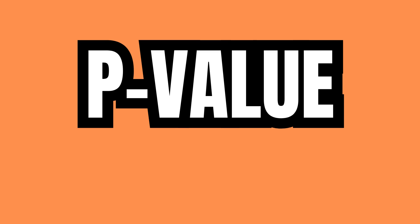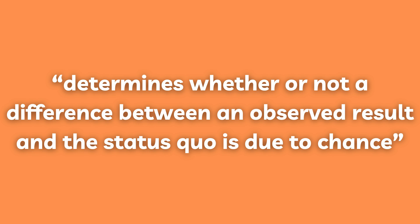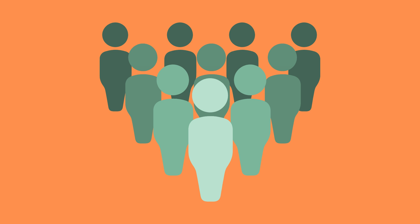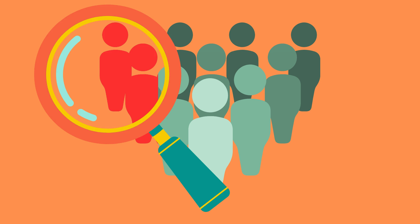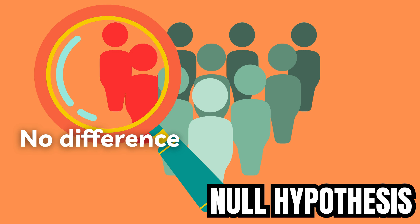The p-value is used for hypothesis testing to determine whether or not a difference between an observed result and the status quo is due to chance. When the p-value is being calculated, it is initially assumed that there is no true difference between the status quo and the observation. This is what we call the null hypothesis.